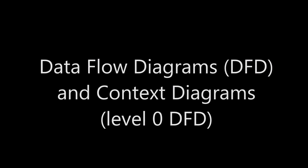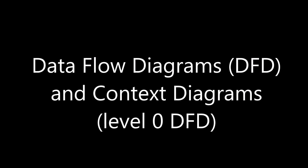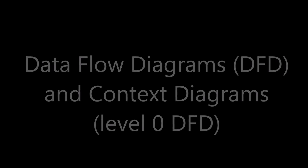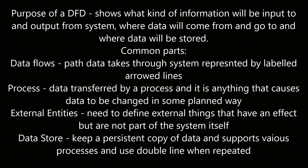Data flow diagrams and context diagrams, which are level 0 DFDs. The purpose of a DFD is to show what kind of information will be input to and output from a system, where the data will come from and go to, and where data will be stored. Common parts include data flows, which are the paths data takes represented by a labelled arrow line; processes, which are when data is transformed in some planned way; external entities, which are external things that have an effect but are not part of the system; and a data store, which keeps a persistent copy of data, represented by a double line when repeated.